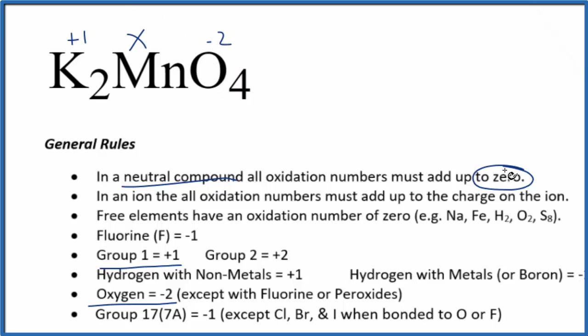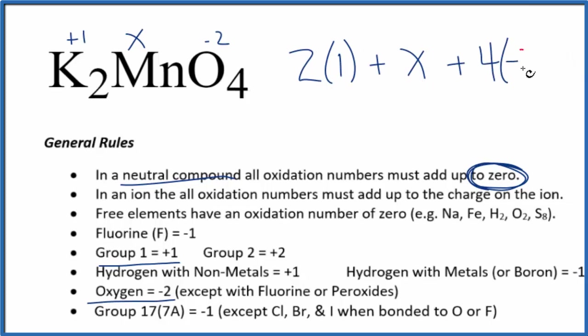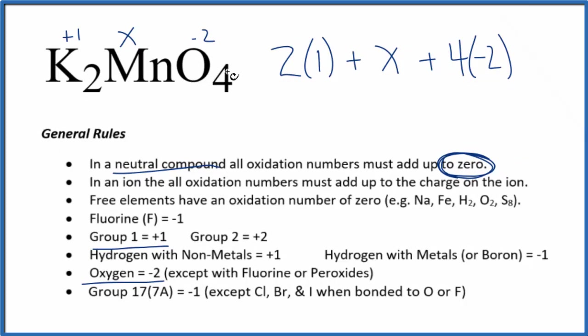So now we can solve for X, because we know everything is going to add up to zero. We could say two potassium atoms, each one has a one plus oxidation number, plus, we don't know the manganese, X plus four times minus two. We have four oxygen atoms, each one's minus two. All that equals zero.